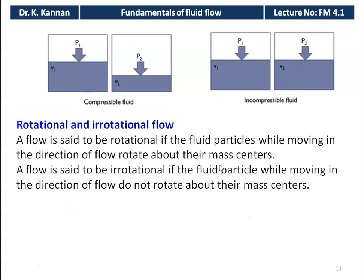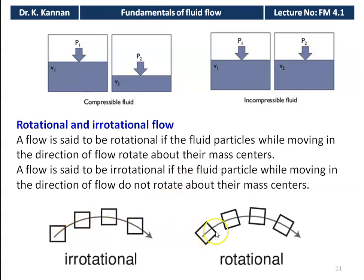Rotational flow occurs when fluid particles, while moving in the direction of flow, also rotate about their own mass center. Irrotational flow occurs when fluid particles do not rotate about their mass center while moving. Looking at the diagram: in irrotational flow, the particle moves from left to right without changing its orientation; in rotational flow, the particle changes its position about its center — that is rotational flow.